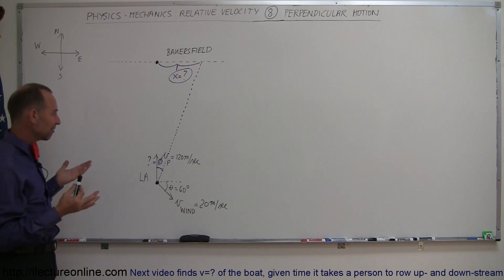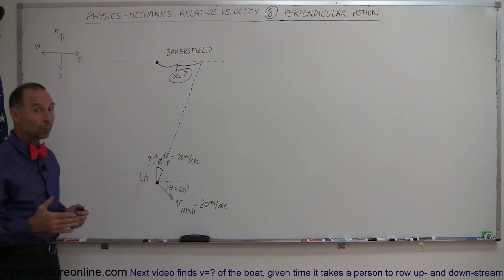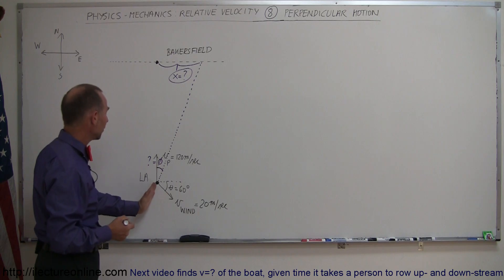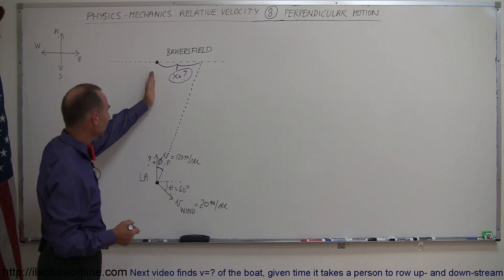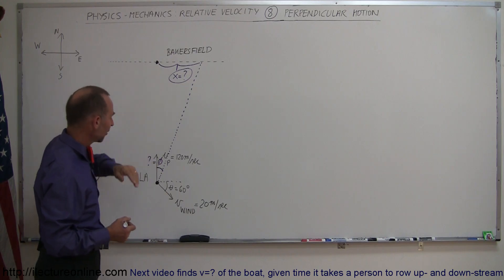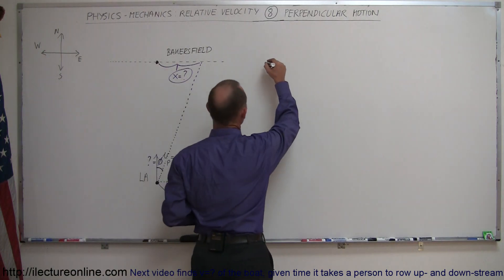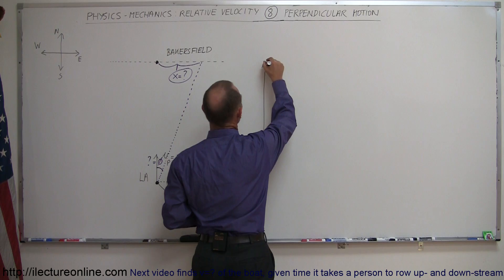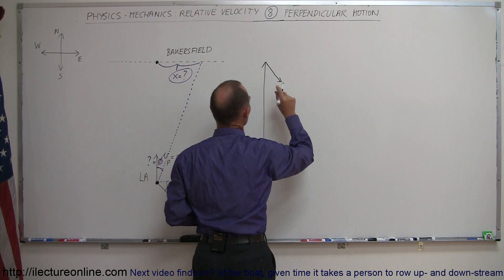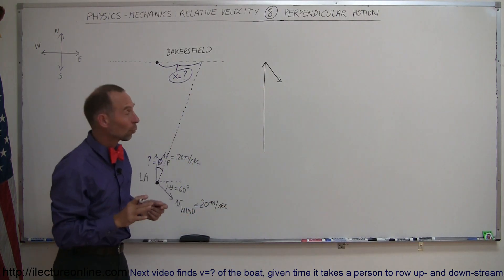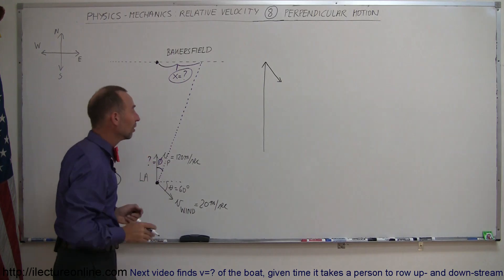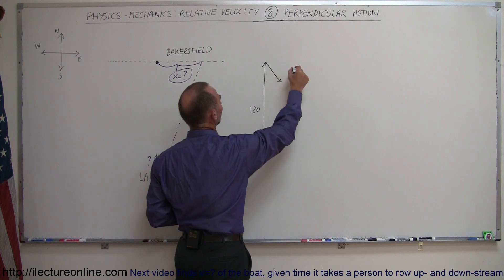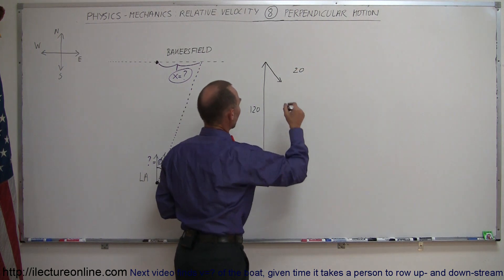First we need to find a way to determine that angle. We're going to use vectors and triangles. We have the vector representing the velocity of the plane and the vector representing the velocity of the wind. We can draw that right here — there's the velocity of the plane, and here's the velocity of the wind. The length of those vectors should be relative to the velocities they represent: 120 meters per second for the plane and 20 meters per second for the wind.